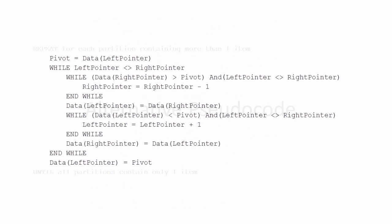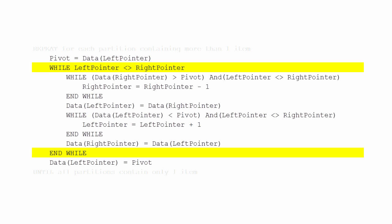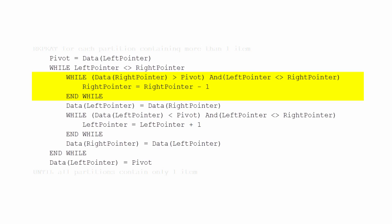There's another way to do the same thing — arguably a little more elegant with less code. As before, the pivot is assigned from the data given by the left pointer, and a loop runs while the pointers haven't collided. Inside, there's a loop which will run while the data at the right pointer is bigger than the pivot, and of course the pointers haven't collided yet.